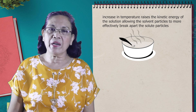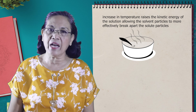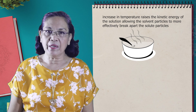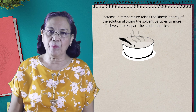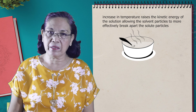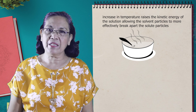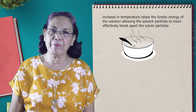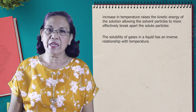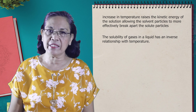However, there are substances wherein solubility decreases as temperature increases. For example, protein. When we heat a protein-containing substance like meat, it will not tenderize easily because the protein coagulates as the temperature increases. Also, in the case of gases, there is an inverse effect on the solubility of the gas in the solution.